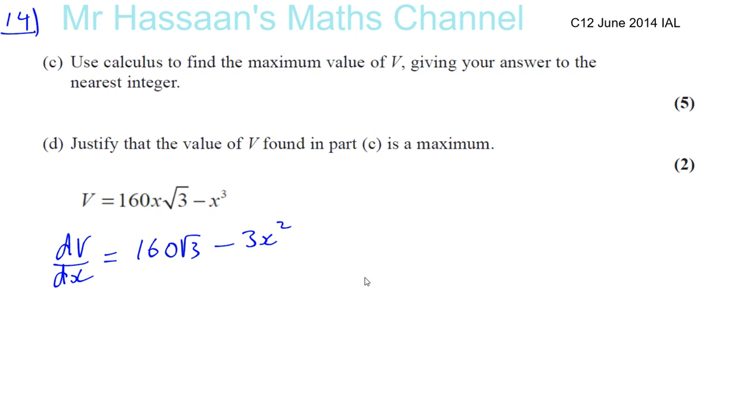Okay, now the maximum and minimums are found when the gradient function is equal to 0. Okay, when something is turning. So we need to find it when dV dx is equal to 0. So we have 160 times root 3 minus 3X squared is equal to 0. So I have to solve this equation. So we can bring that to that side. You have 160 times root 3 is equal to 3X squared. And we can divide both sides by 3.